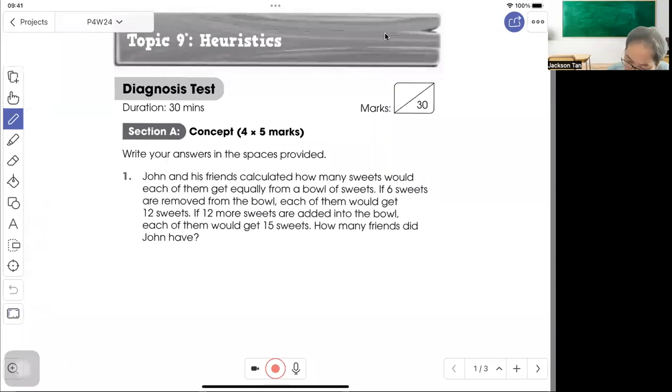So look carefully. When we take away 6, each will then get 12. If 12 more are added, each of them get 15. So from taking away 6 all the way to adding 12, the total difference itself is 18. And because of this 18 difference, it resulted that each of them from 12 become 15.